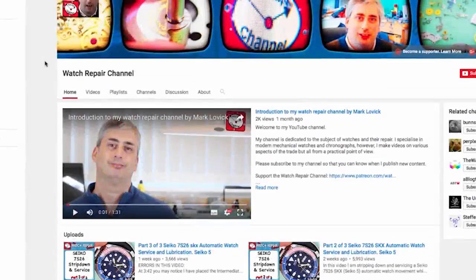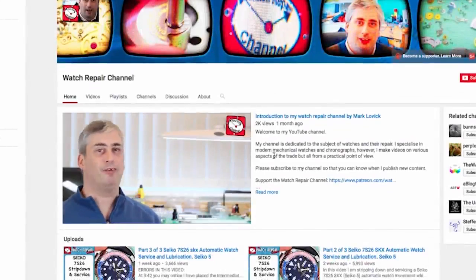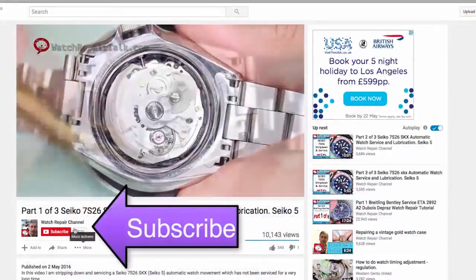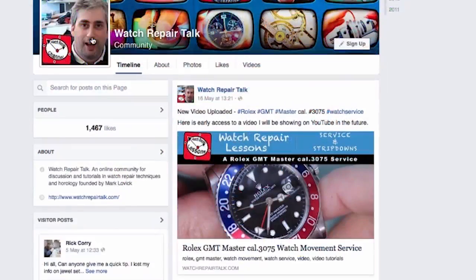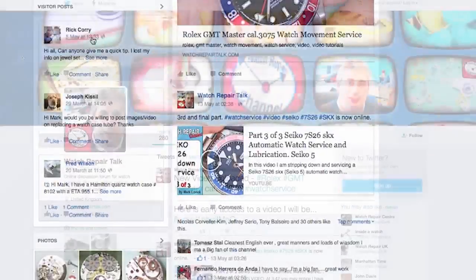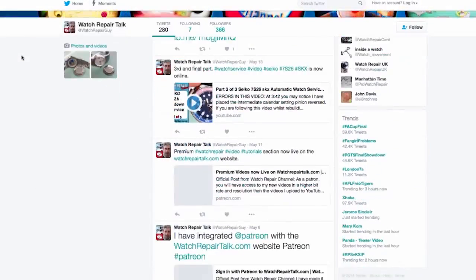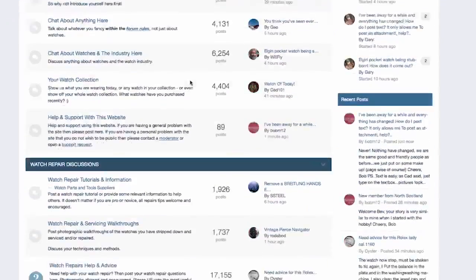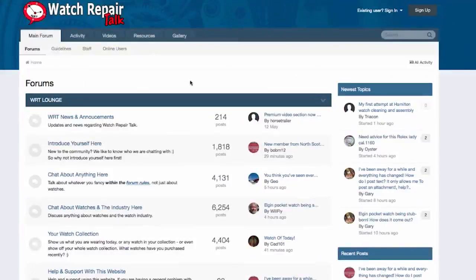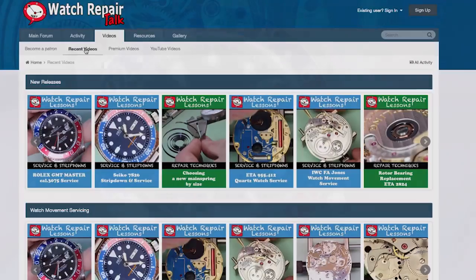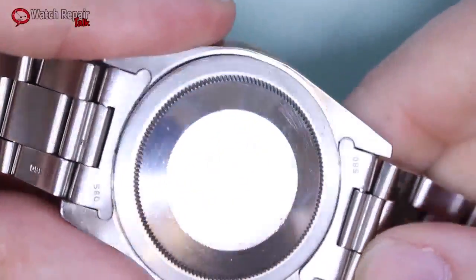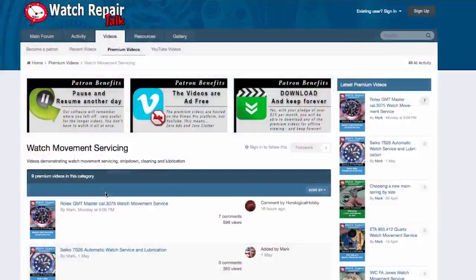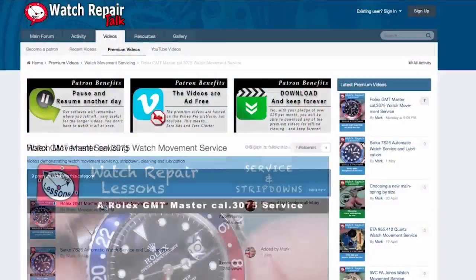So thank you for watching and if you are new to my video content, then please consider subscribing. It's free and you'll be informed when I publish new content. And if you are new to my video content, you can also find me on Facebook and Twitter. Also be sure to visit my website at www.watchrepairtalk.com and here you are going to find even more content and find out how you can watch my premium watch repair videos. And my latest video is the full strip down and service of a Rolex caliber 3075 GMT Master and this can be watched exclusively on Watch Repair Talk but will be released on YouTube very soon.